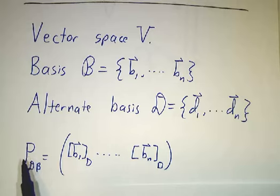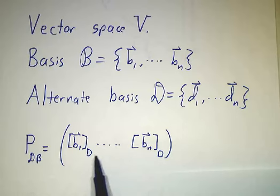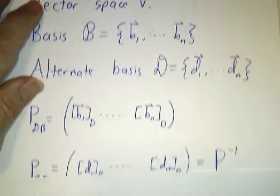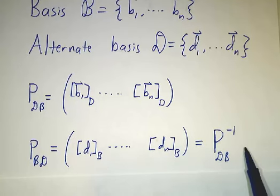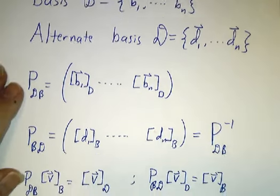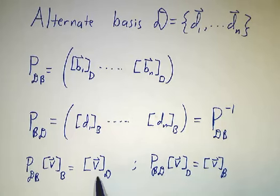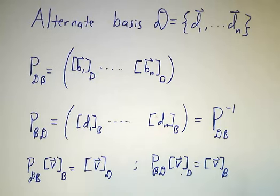So we construct a change of basis matrix Pdb, and the formula for that was: take all of the b vectors and write their coordinates in the d basis, package them together and you get this matrix. And then we had another matrix with the roles of b and d reversed — we call that Pbd. Those two matrices are inverses of each other. Pdb eats the coordinates in the b basis and gives you the coordinates in the d basis. Pbd eats the coordinates in the d basis and gives you the coordinates in the b basis.